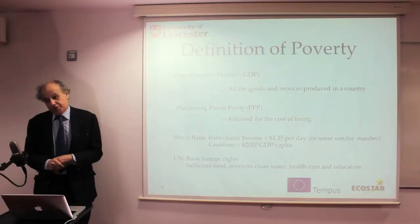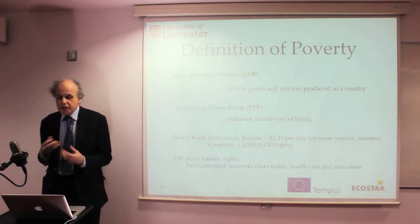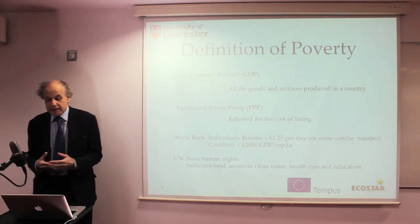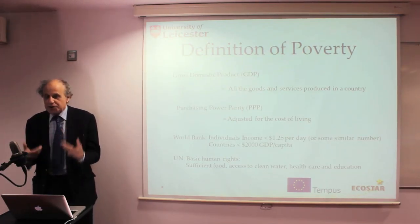That's a very crude definition of poverty. A more socially centred definition focuses on human rights. The UN definition of absolute poverty is that one falls below the basic human needs — so that people who are absolutely poor fall below the level of providing sufficient food, sufficient access to health care, sufficient education so that they can at least participate in society. That's a more socially focused definition of absolute poverty.